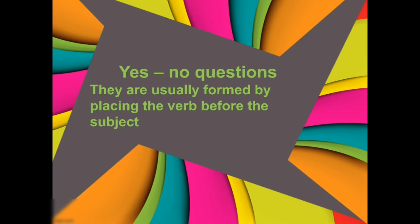In questions kaun banate kaise hain? By placing the verb before the subject. Verb — ap sabko pata hai kya hota hai? Action. They are formed when we place the verb. Ham verb ko subject se pehle likhte hain. This is how we form a question. Let's see. Let's take an example, students.